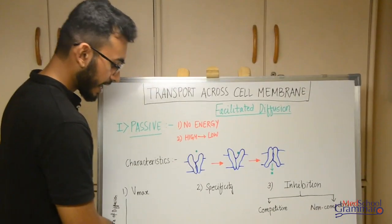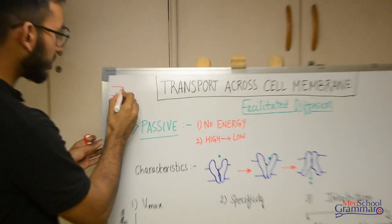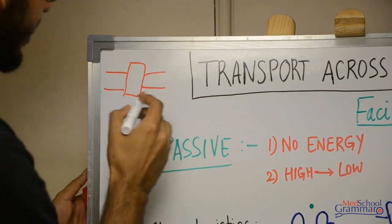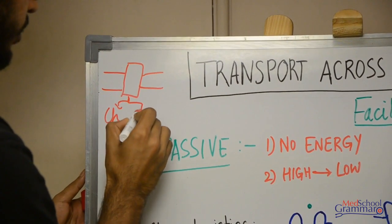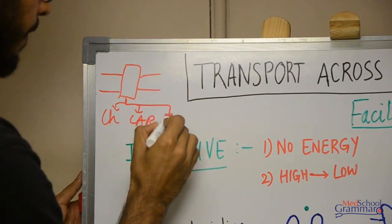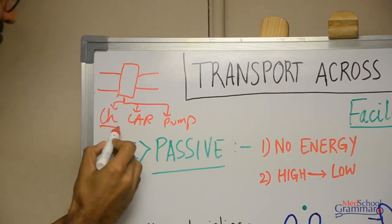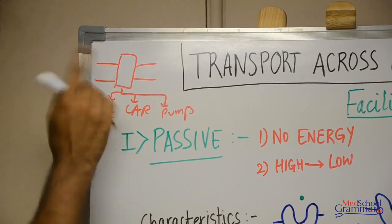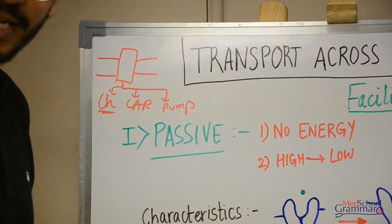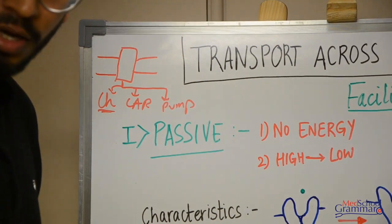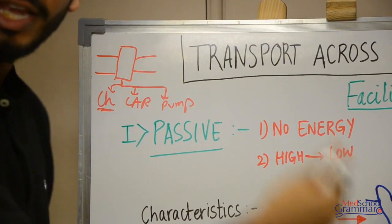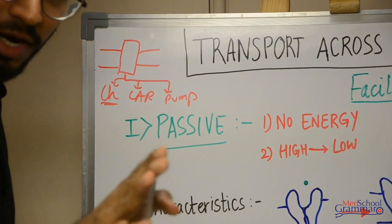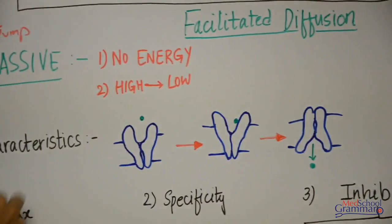The cell membrane has certain transmembrane proteins. We've already seen that this protein can act either as a channel, a carrier, or a pump. We've seen its role as channels under simple diffusion. As a carrier, it helps in facilitated diffusion. So facilitated diffusion means movement of a molecule from an area of its higher concentration to an area of its lower concentration with the help of carrier proteins.